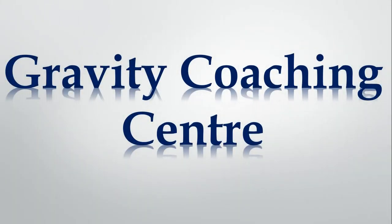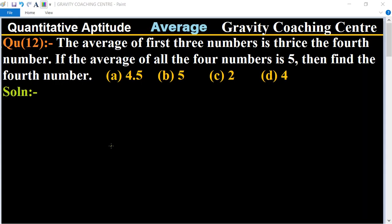Welcome to our channel Gravity Coaching Centre, Quantitative Aptitude, chapter Average, question number 12. The average of first three numbers is thrice the fourth number. If the average of all the four numbers is 5, then find the fourth number.